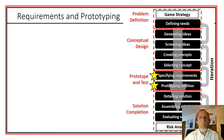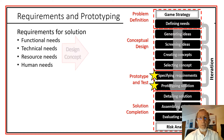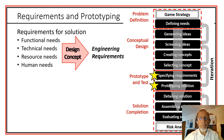We're going to be talking about requirements and prototyping, which occurs in the third phase of the engineering design process. Recall that we have already talked about needs and have come up with a design concept. So our functional needs, technical needs, resource needs, and human needs, now focused around this concept, will lead to engineering requirements.